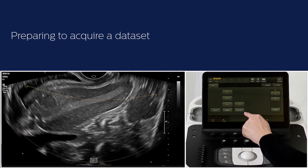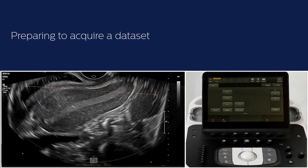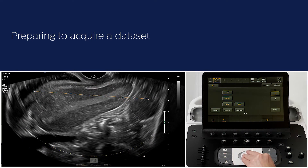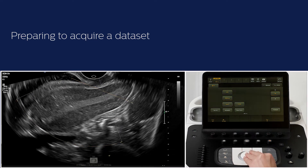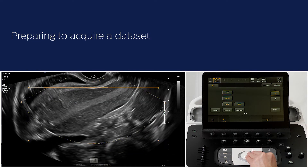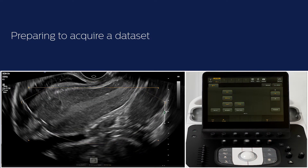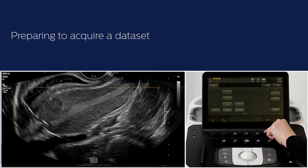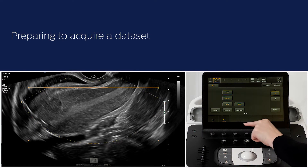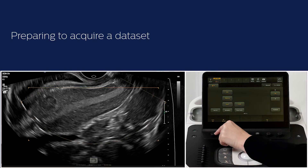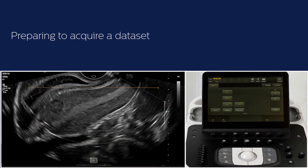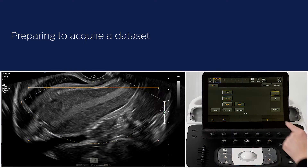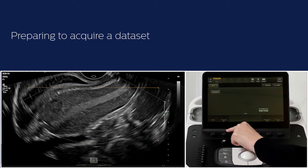Press Reset Curve to return the volume view line to a straight line if needed. Make sure to include all anatomy needed in the ROI box. Further settings can be changed to increase the resolution of the 3D data set. Adjust the angle if a bigger or smaller sweep is needed. The 2D Opt can be changed to Res; a Gen or Pen setting is also available. On the second page of the touch screen, changes can be made to Chroma Map and/or the Gray Map.